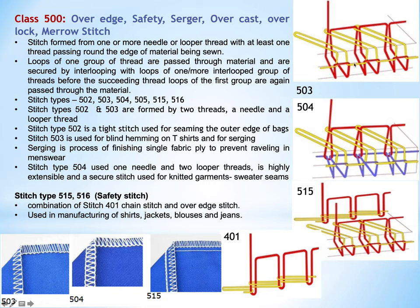Stitch 503 uses one needle thread and a looper thread, where the needle thread covers the edge of the material. The lower diagram shows one yellow needle thread and a looper thread covering the fabric edge. A combination of this over-edge stitch 503 and stitch 401 together forms the 515 sub-classification of class 500, which uses two needle threads and two looper threads — two needles and two loopers. It is generally used in manufacturing shirts, jackets, blouses, and jeans.